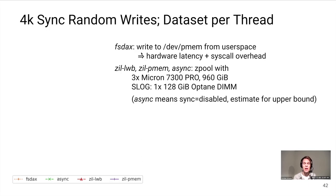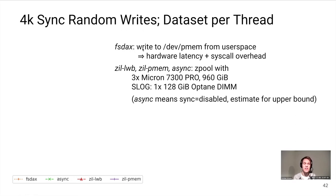Let's look at some benchmarks. We start with the primary workload: 4K synchronous random writes with a separate dataset per thread. I know this isn't representative of most ZFS workloads, but it's surely a torture test for the ZIL. I compared four configurations: the fsdex configuration which writes directly to PMEM from user space giving raw hardware latency plus some syscall overhead; and three others — zilawb, zilpmem, and async — all on a zpool with three enterprise NVMe drives and one persistent memory DIMM as a slog device.